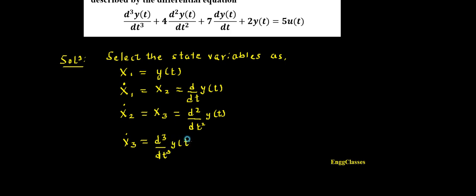I don't call this as X4 because I need to select the minimum state variables. Hence, the last state variable would be X3-dot equal to d³y(t)/dt³. Now I will use these in the given equation.